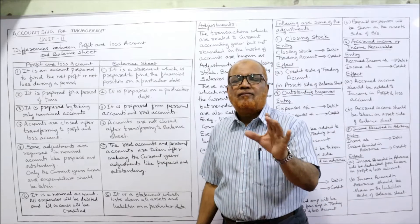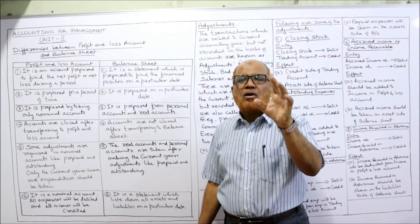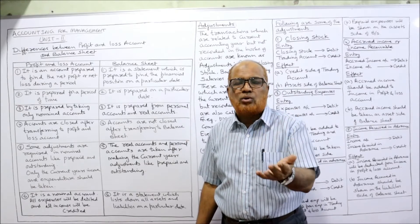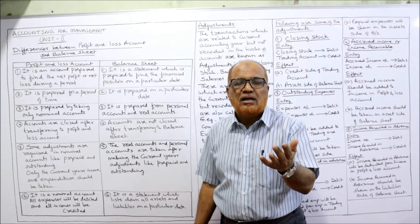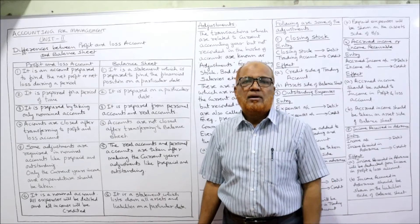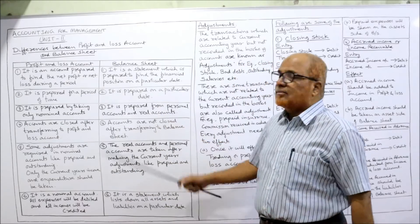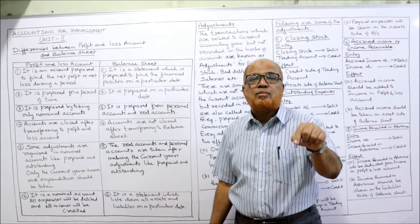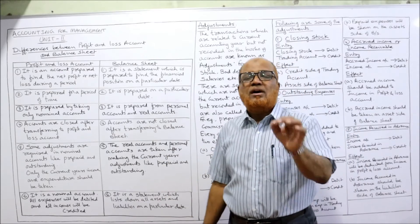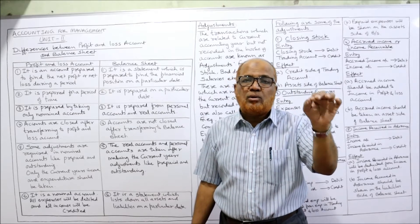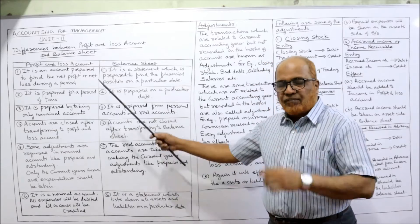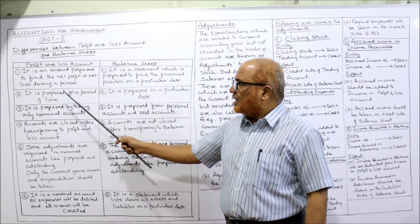First difference — purpose. The profit and loss account is an account prepared to find out the net profit or net loss during a particular accounting period. Whereas the balance sheet is not an account — it is a statement prepared to find out the financial position on a particular date. Note the wording: profit and loss is for a period, balance sheet is on a particular date.